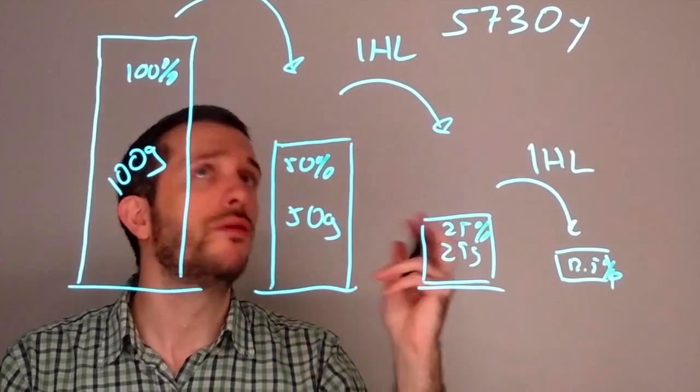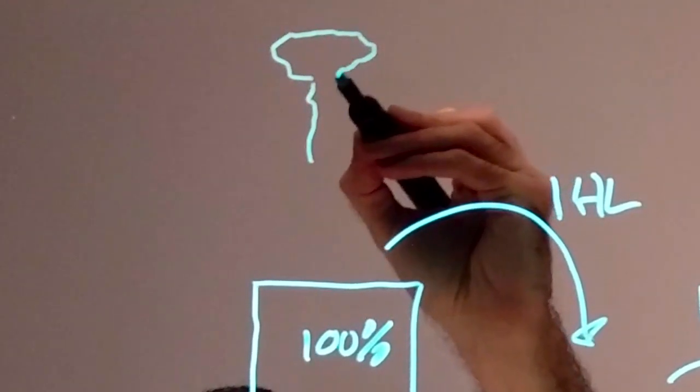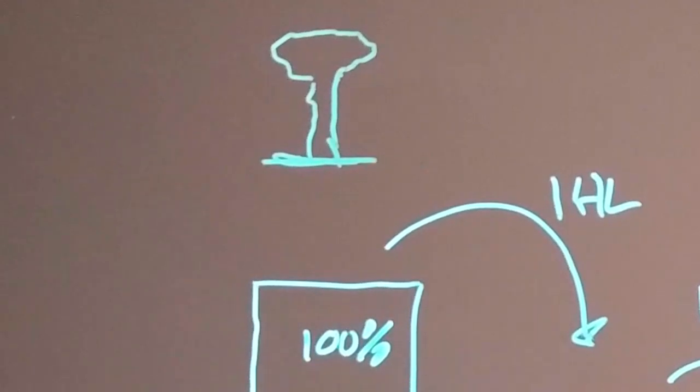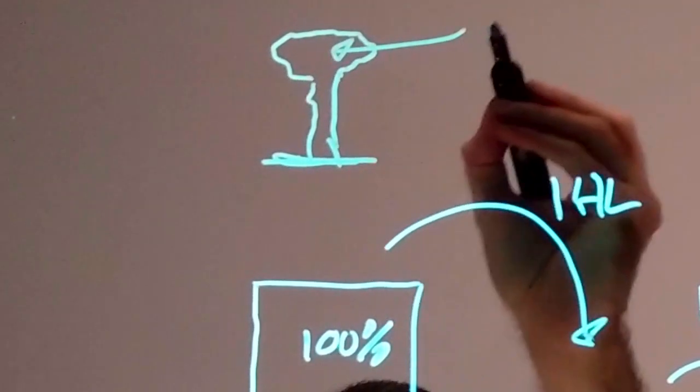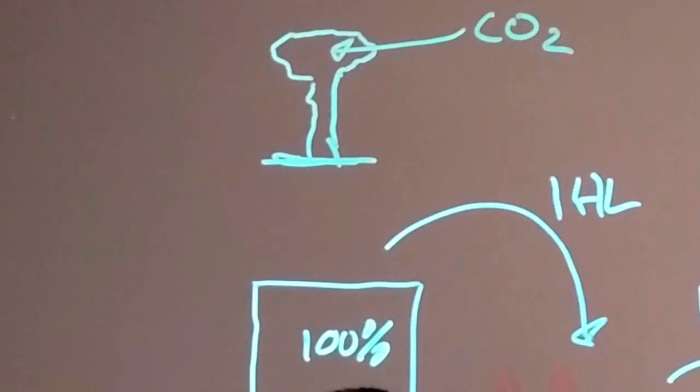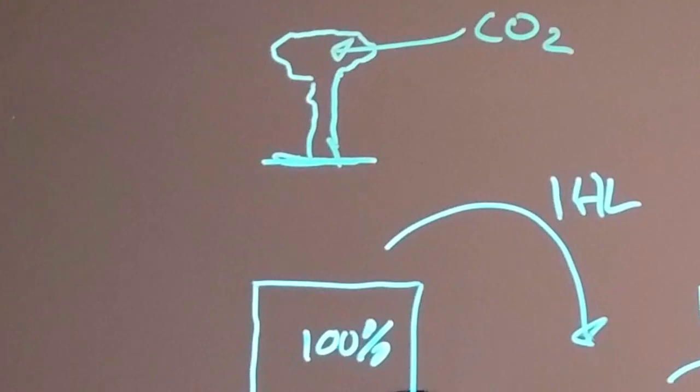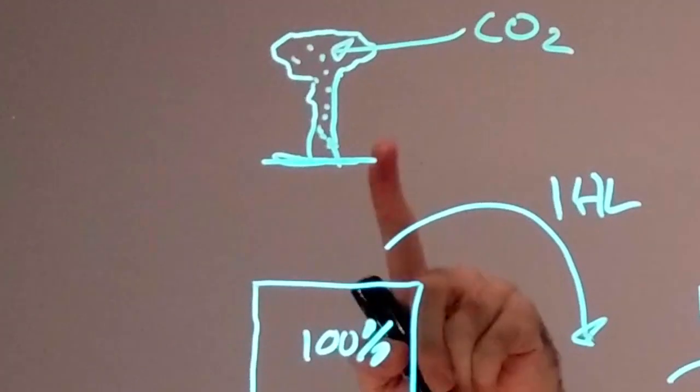So, this is where it gets interesting. Let's say you have a tree, and it's alive. That tree will breathe in CO2. And out of the carbons that it breathes in with the CO2 and builds into its cells, there is going to be a fraction that is C14.